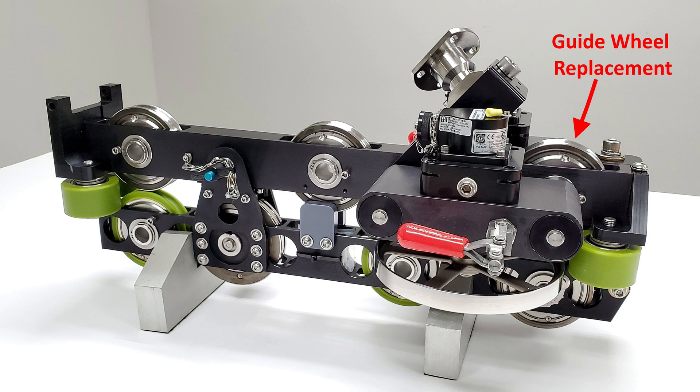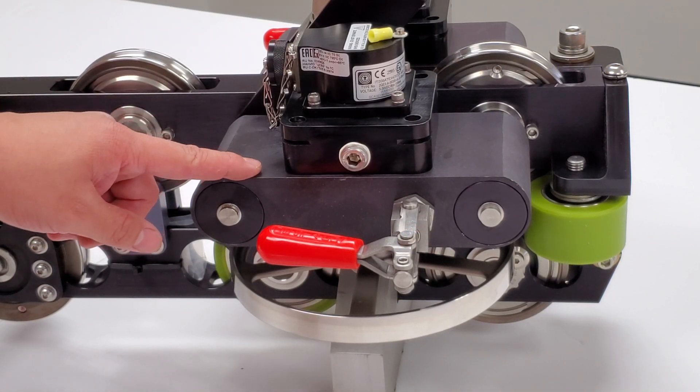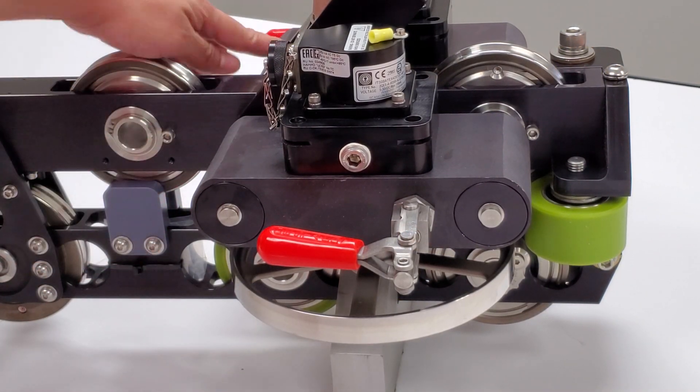In this video we will show how to replace the guide wheel on the AM5K measuring head from Benchmark Wireline. The two cameras will need to be removed to gain access to the wheel.